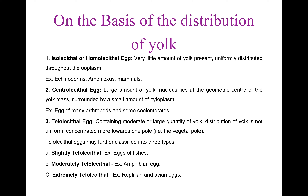Slightly Telolecithal Eggs contain only a small amount of yolk, which is distributed unevenly. The vegetal pole has the highest concentration, but the animal pole has the lower concentration. These types of eggs are found in fishes. Moderately Telolecithal Eggs contain a moderate quantity of yolk, and yolk is distributed unevenly. Because of the high concentration of yolk in the vegetal hemisphere, the nucleus is shifted more towards the animal hemisphere. This type of eggs are found in amphibians.